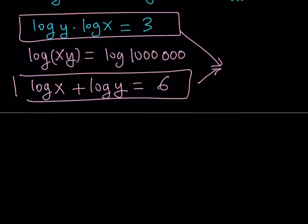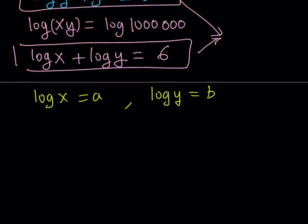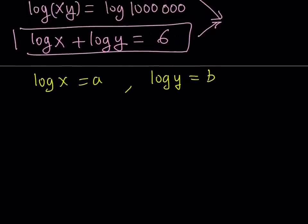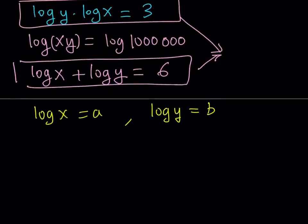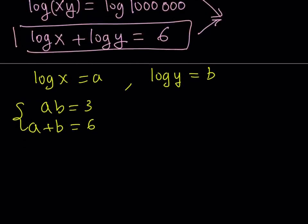How to use substitution? Let's call log x, let's set it equal to a, and let's say log y is equal to b. If you don't like a and b, you can use c and d, or whatever other variables you like. It doesn't really matter. So I can write my system as ab equals 3, and a plus b is equal to 6.